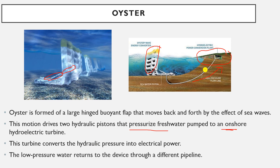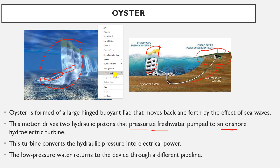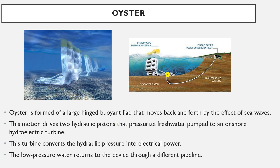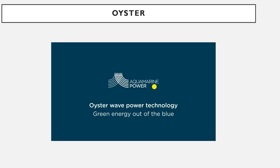There is another pipeline which returns the low-pressure water back to the device through a different pipeline. So we have two pipelines: one which takes the high-pressure water to the hydroelectric power station, and after generating electricity the low-pressure water returns back through a separate pipeline to the device.